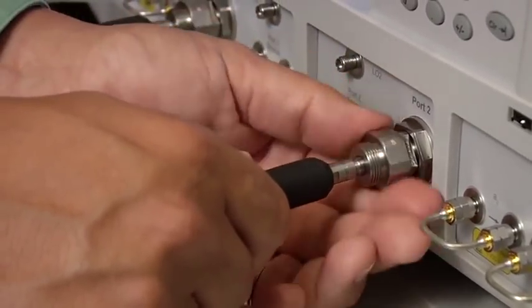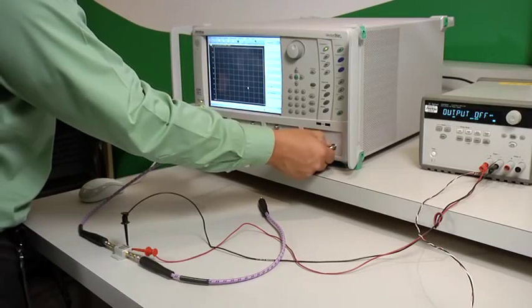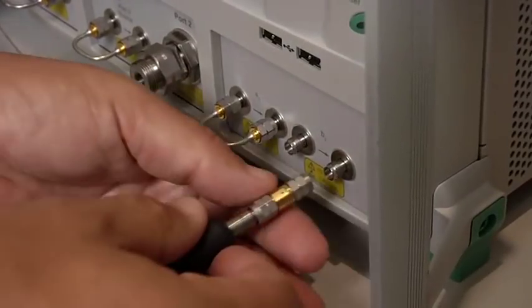It is recommended that the noise figure measurements are made by connecting directly to the VNA receiver. For VectorStar, that's port B2. This allows you to get optimal performance from the composite receiver.